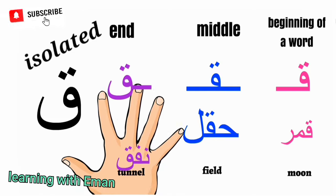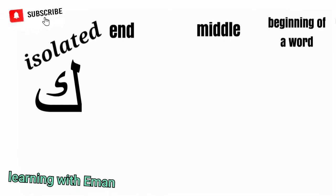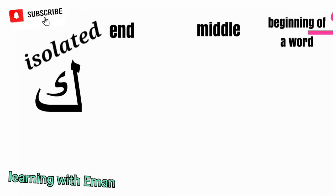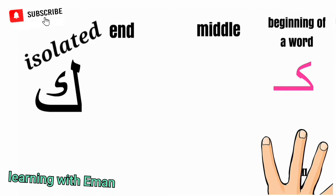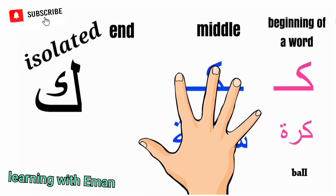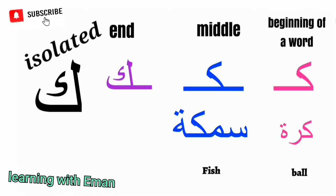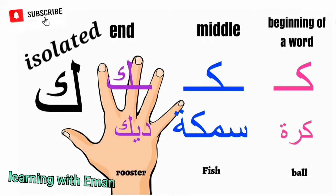The next letter of the Arabic alphabet is Kaf. Kaf is equivalent to the English letter K. At the beginning of a word, like 'Thawr', meaning a bull. At the middle of a word, like 'Samaka', meaning fish. At the end of a word, like 'Dik', meaning rooster.